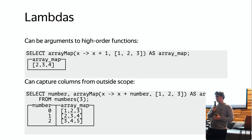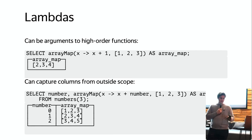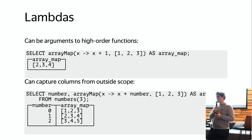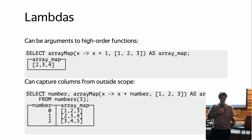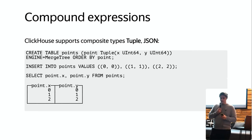Another feature is lambdas — also a very natural part of the ClickHouse language. A lambda can be an argument to a higher-order function; for example, you can pass a lambda into arrayMap. On the slide we have array [1,2,3] and a lambda that adds 1 to each element. A very important thing is that lambdas can capture columns from outer scope — on the slide we fetch some numbers and use arrayMap where the lambda subtracts the array element from a column `number` from the outer scope.